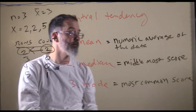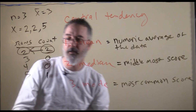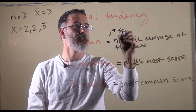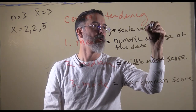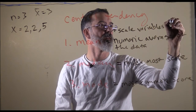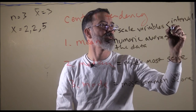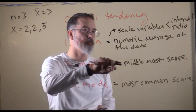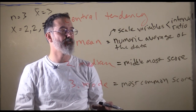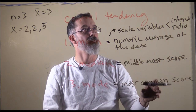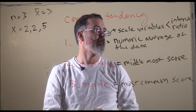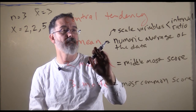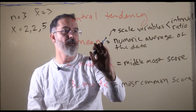Those are the three measures of central tendency, used in different contexts in practice. The mean can only be used for scale variables — either interval or ratio scale of measure. You cannot calculate a meaningful mean with nominal or ordinal variables. Because scale variables are the most common outcome variables in psychology, the mean is the most common kind of central tendency used in psychology.